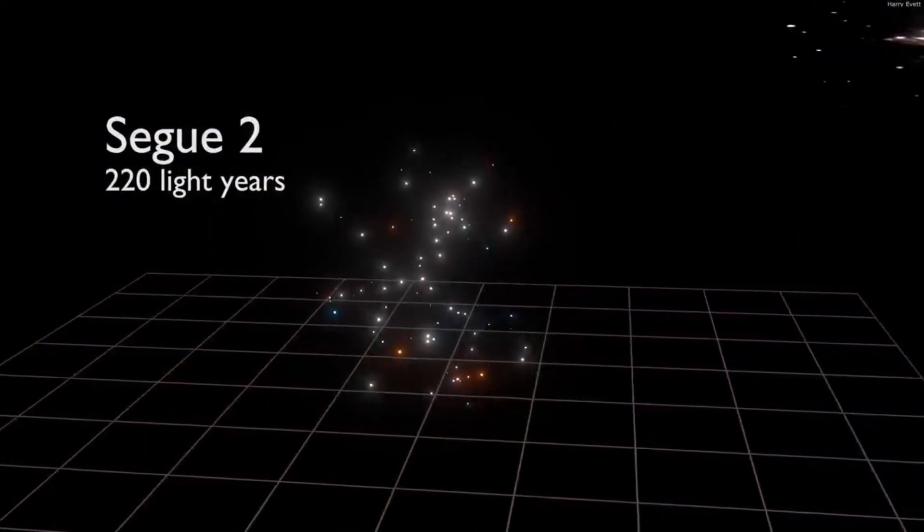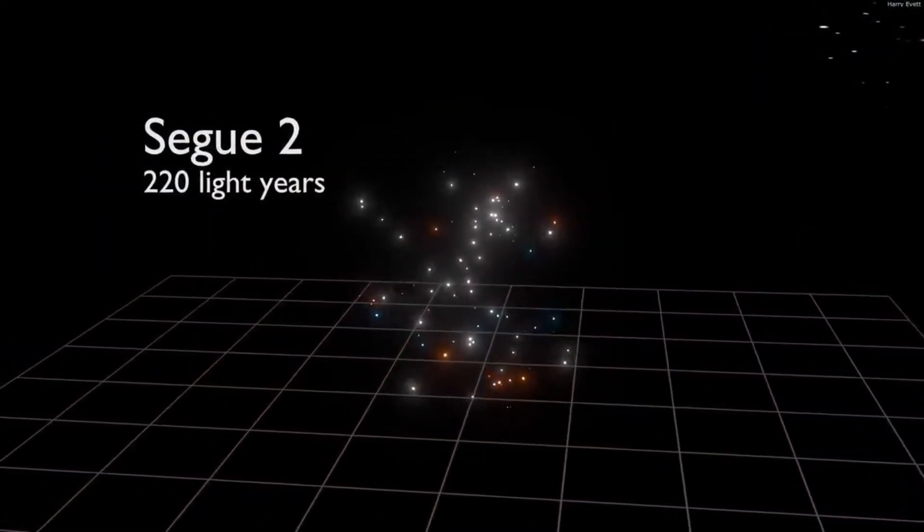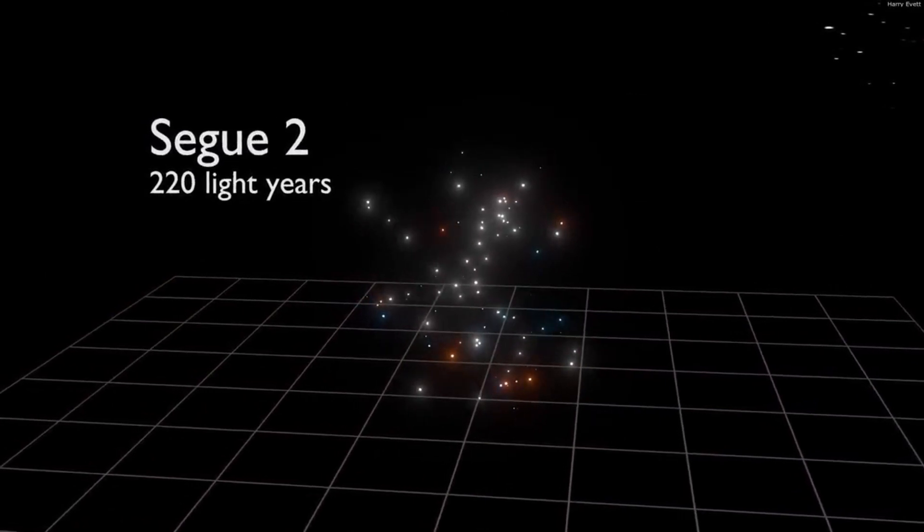Although Segway 2 contains only around 1,000 stars, it extends over a space of 220 light-years, showcasing its remarkable density.